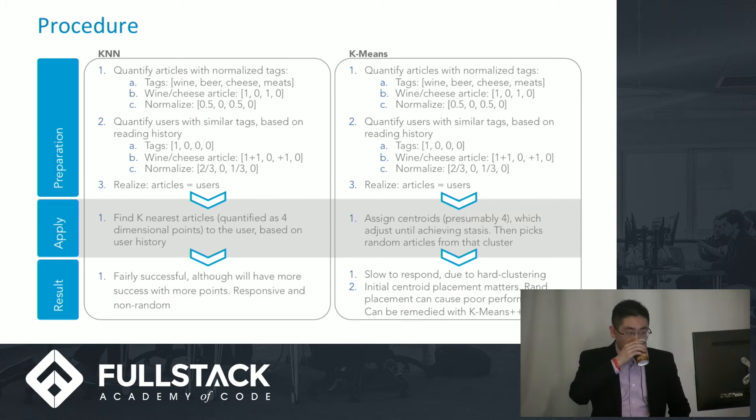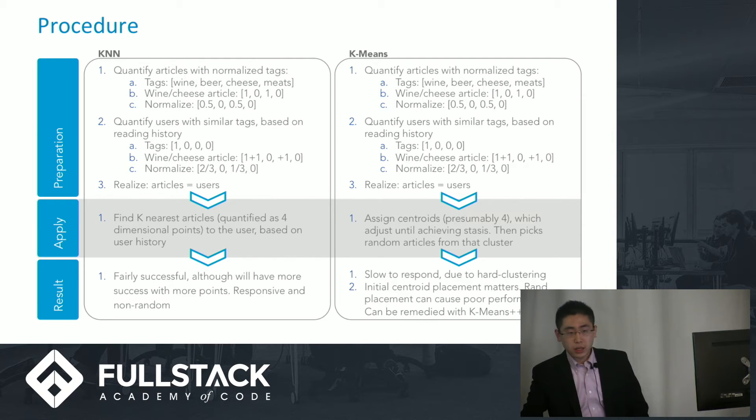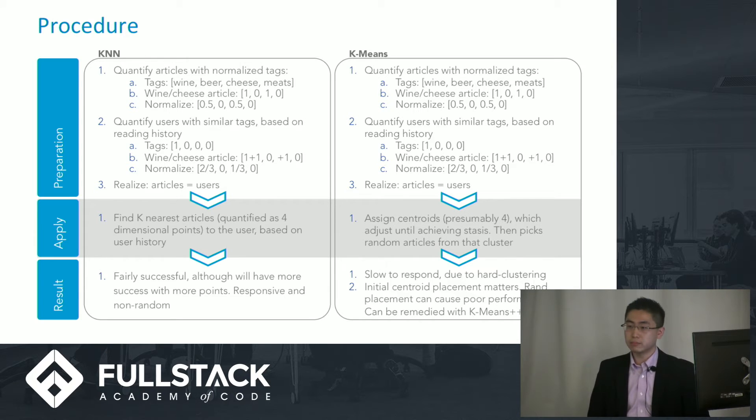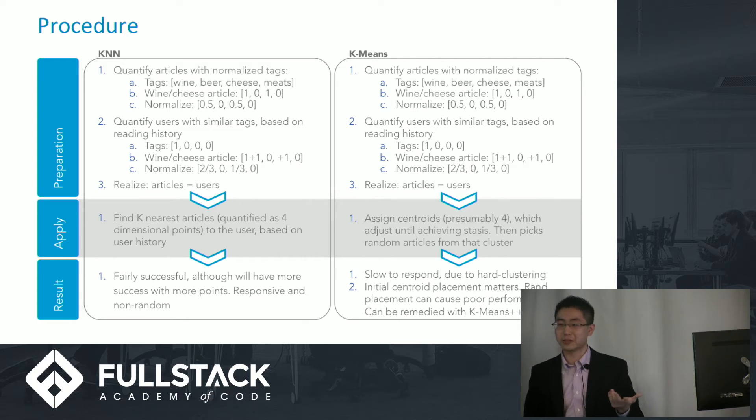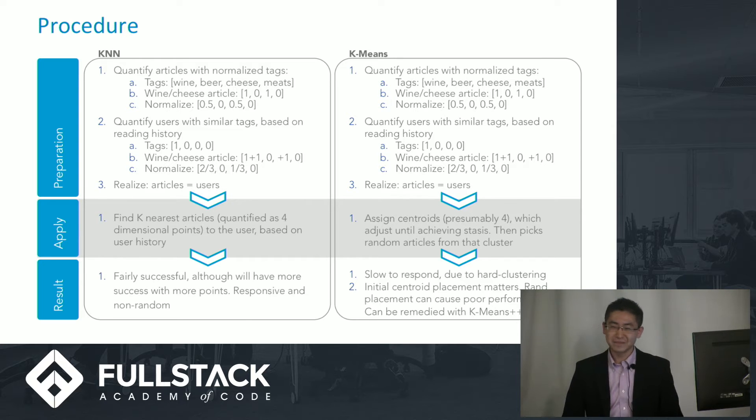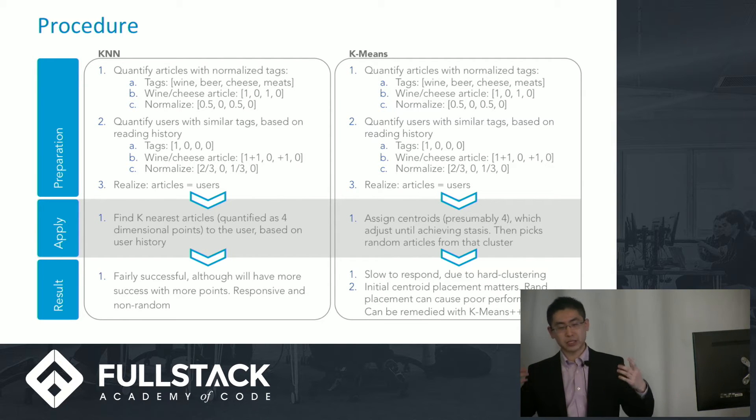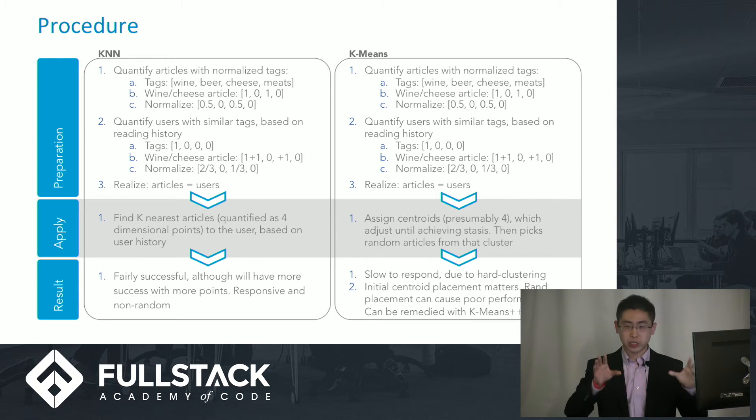So what I did was I built KNN and K-means and basically had it run on a server and tried to extract actual data from it. So what I did is, most of you guys know that I'm a foodie, I love my food, and I'm trying to build a food blog. So what I tried to do was essentially take four tags.